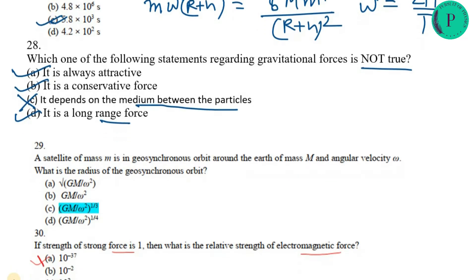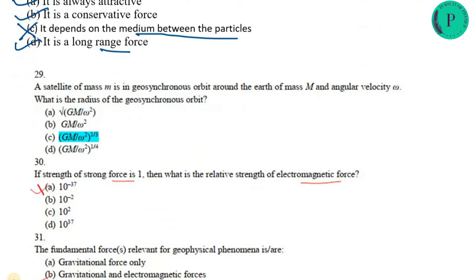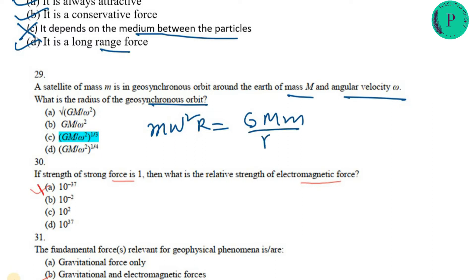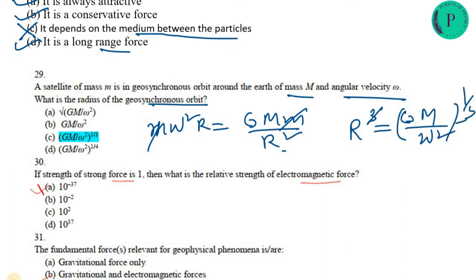Next, a satellite of mass m is in a geosynchronous orbit around Earth of mass M with angular velocity ω. To find the radius, use mω²r = GMm/r², which gives r³ = GM/ω², so r = (GM/ω²)^(1/3). Option C is the correct answer.